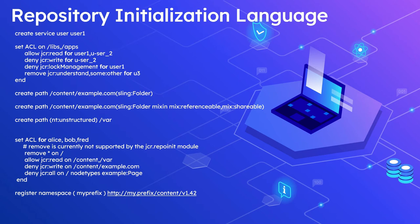The repo init repository initialization language helps us to define the repo init script. This supports various scripts. For example, create service user — you can specify the user name, then setting ACL on specific paths like /libs, /apps, then allow or deny what permission — jcr:read, jcr:write. Then again creating a specific path, and we can specify the folder type.